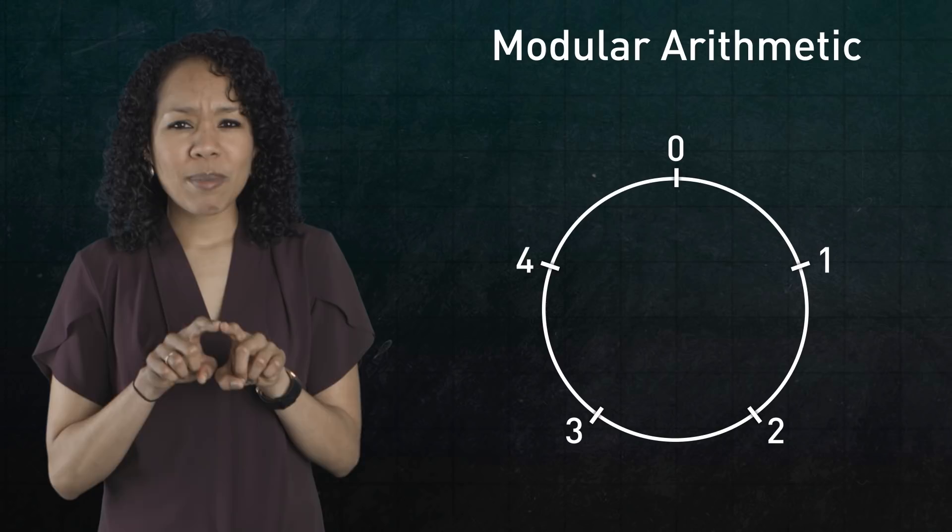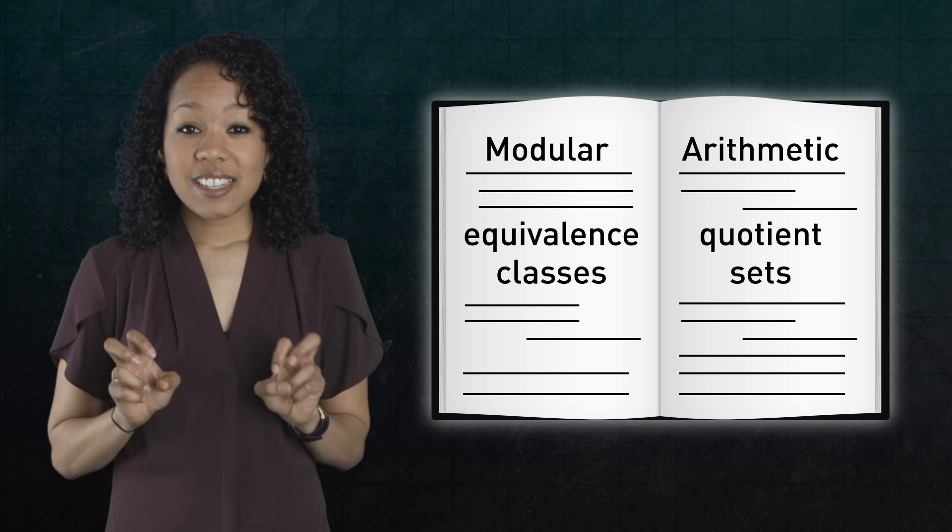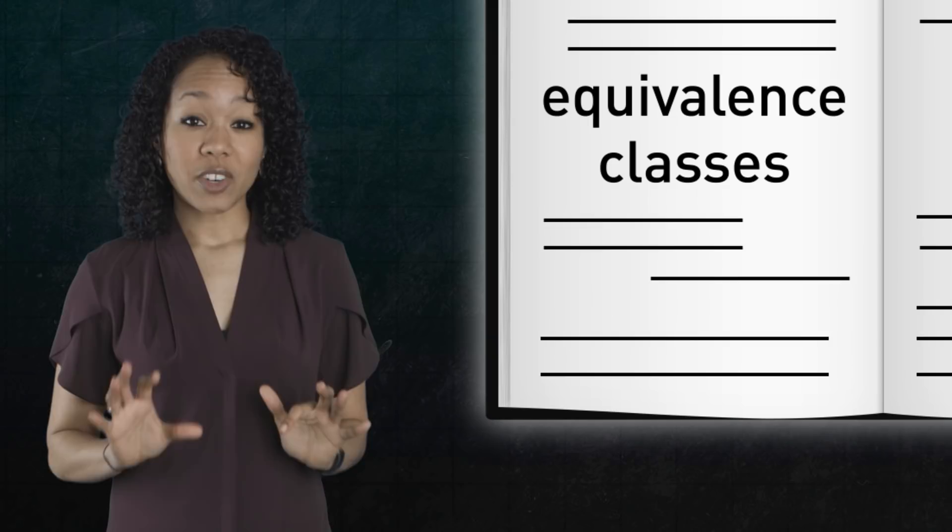Let's focus on mod 5 arithmetic, where 3 plus 4 equals 2, for example. What's really going on here? If you were to look for an explanation in a textbook or online, you'd come across equivalence classes and quotient sets. But what are those? Let's try to understand equivalence classes first.